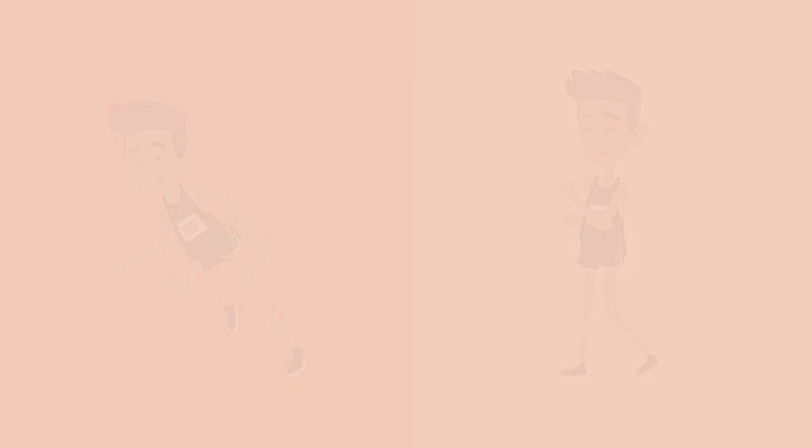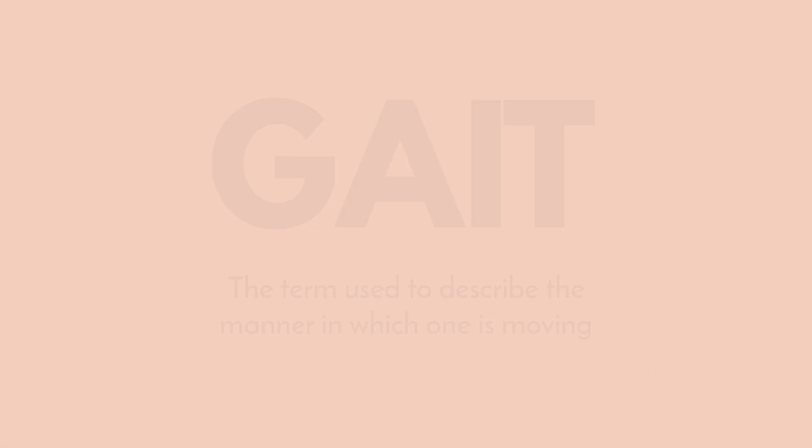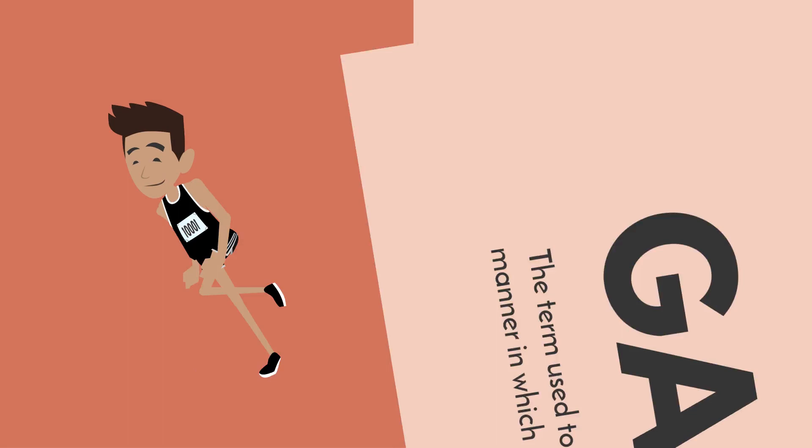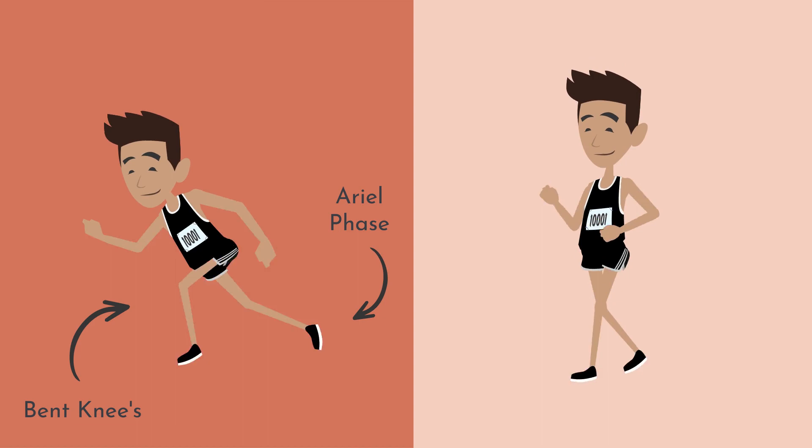A gait is the term used to describe the manner in which one is moving. As such, a running gait can be identified by bent knees and an aerial phase between strides, in which both feet are elevated above the ground. In contrast, a walking gait requires little bend at the knees and there is almost always one foot in contact with the ground.